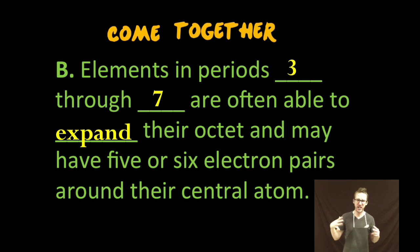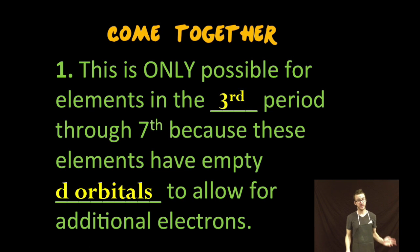Now it's important to recognize this is only possible for elements in the third period through seventh because those elements have empty d orbitals to allow for additional electrons and create what we call the expanded octet.